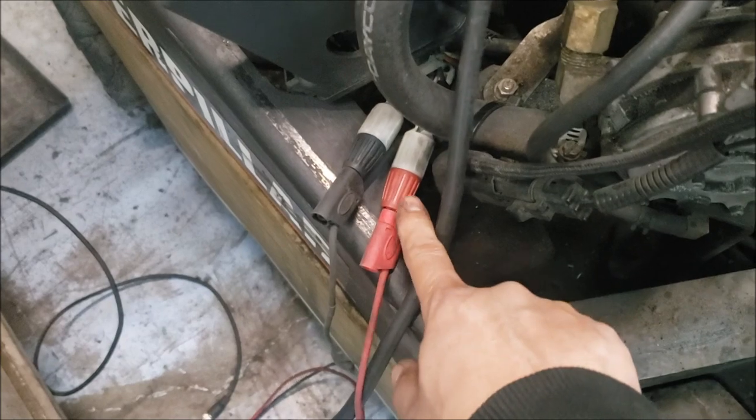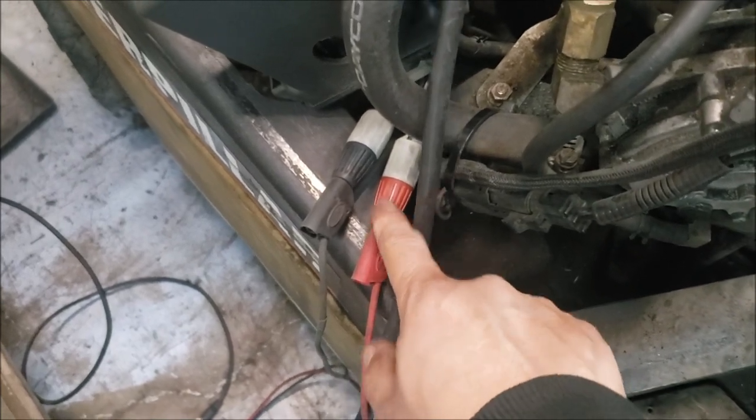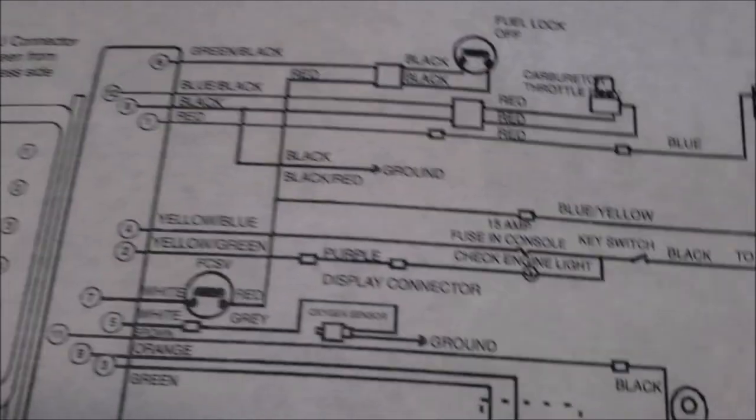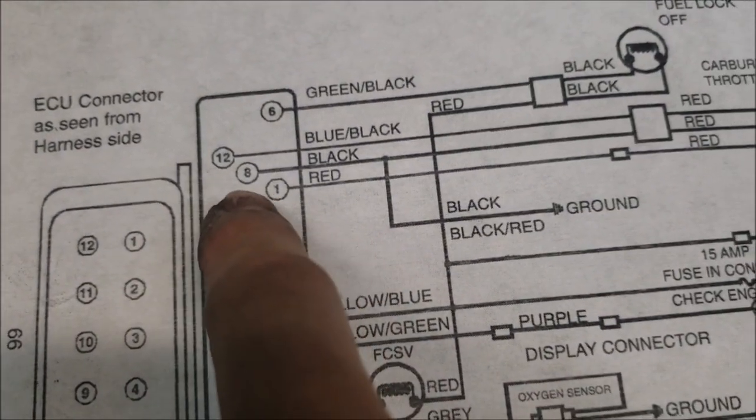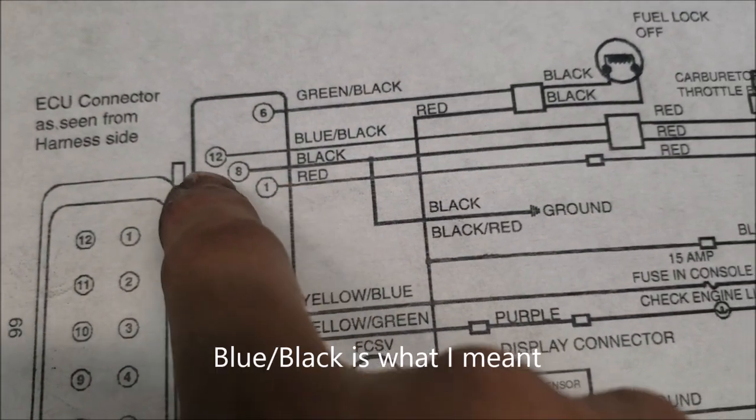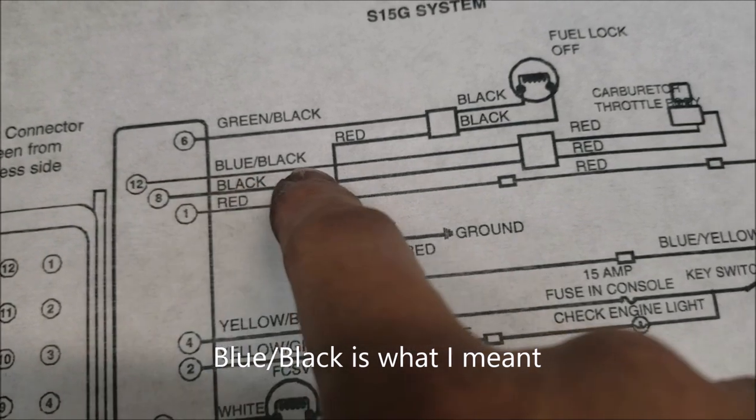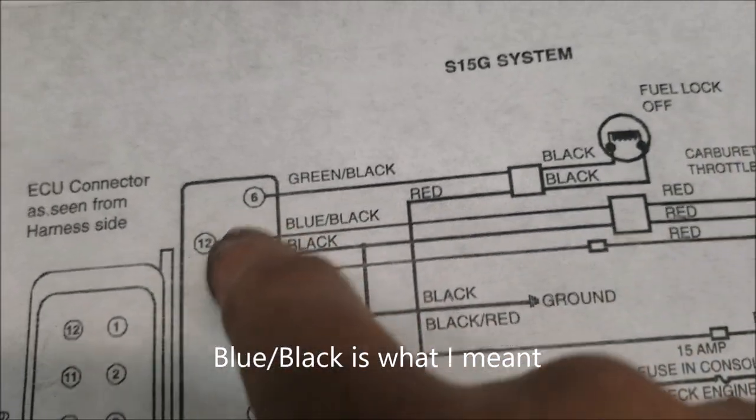So right there, my red is going to be on pin number 12 and the black is going to be my pin number 8. So the red, which is pin number 12, should be the one giving the positive, and number 8 should have a constant negative.